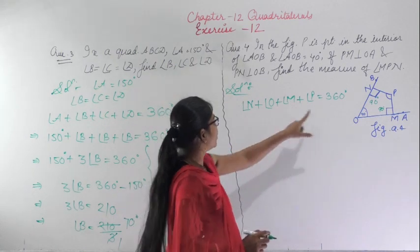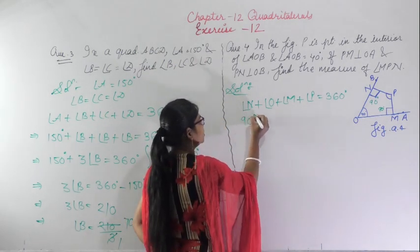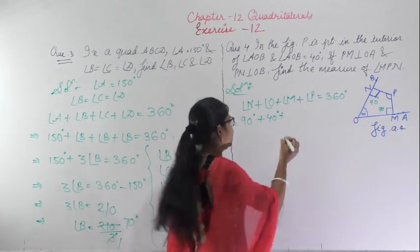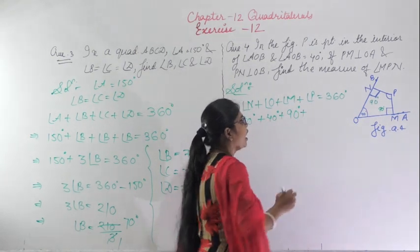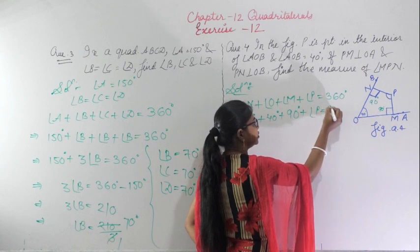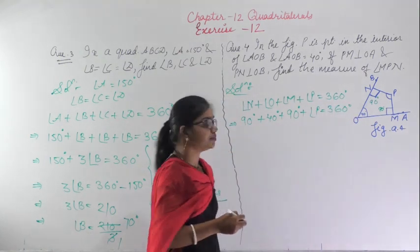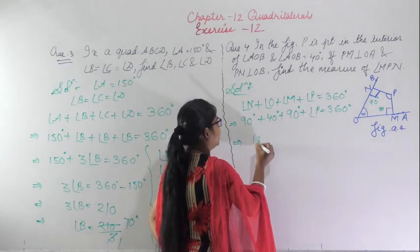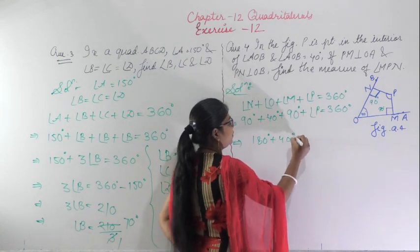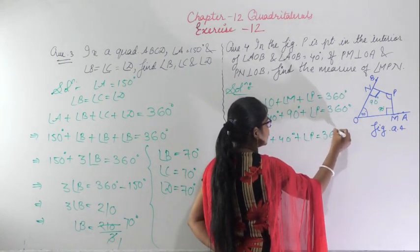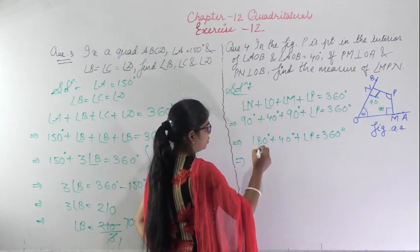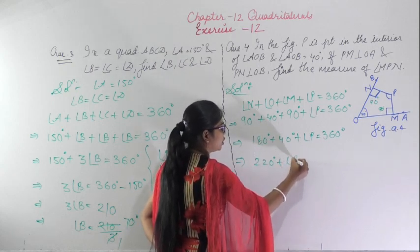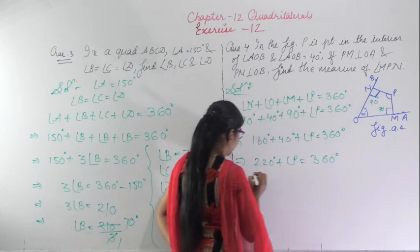Angle N is 90 degrees, angle O is 40 degrees, angle M is 90 degrees because it is perpendicular, and angle P we have to find out. Adding: 90 plus 90 gives 180 degrees plus 40 degrees plus angle P equals 360 degrees. So 220 degrees plus angle P equals 360 degrees.